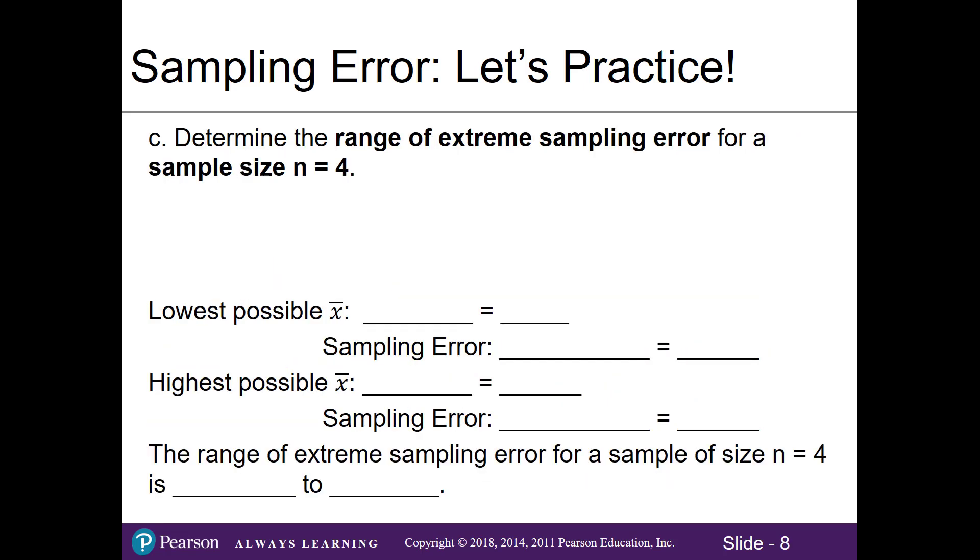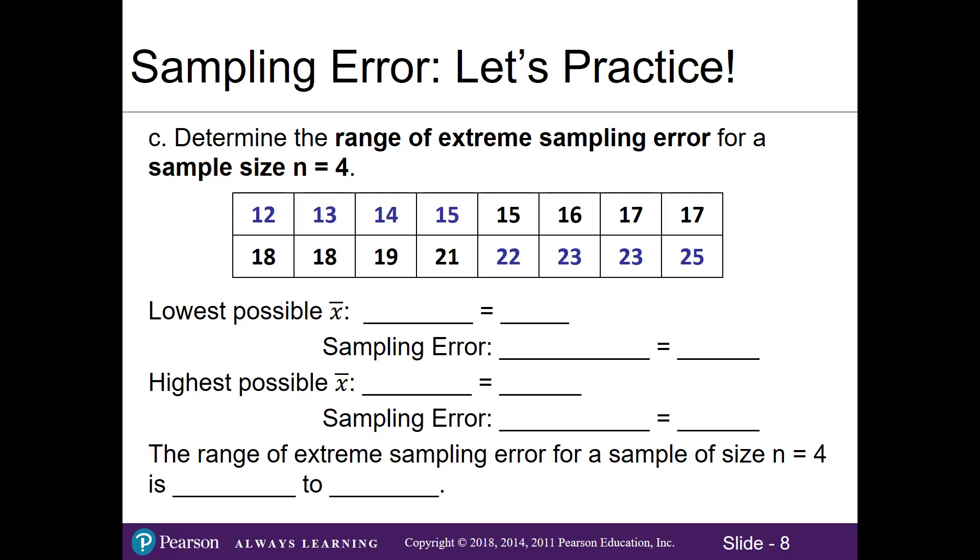In Part C you're asked to determine the range of extreme sampling error for a sample size of 4. Our sample size is different now, we're focused on 4 numbers, and the concept behind the range of extreme sampling errors means the very largest numbers and the very smallest numbers. So I'll take my 16 numbers from before in our population and I'm going to sort them from low to high. That way I can see which ones are my lowest numbers and which ones are my highest numbers.